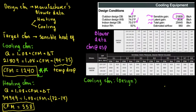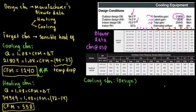The external static pressure values in the table go from 0.1, 0.2, 0.3, 0.4, 0.5, 0.6, 0.7, 0.8, 0.9, up to 1.0 inches of water column. Based on that blower data, we need 1,240 CFM.